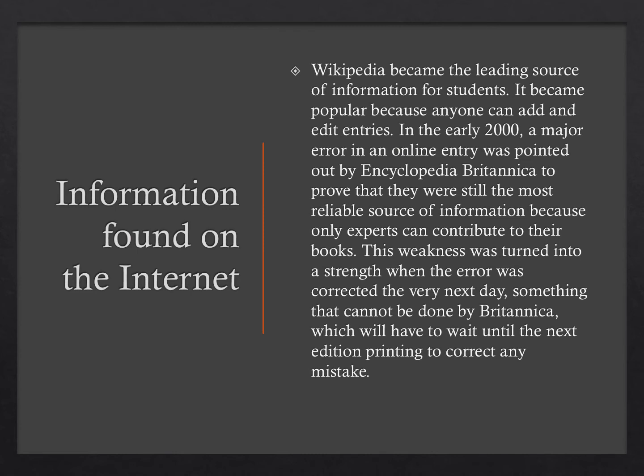Wikipedia became the leading source of information for students. It became popular because anyone can add and edit entries. In the early 2000s, a major error in an online entry was pointed out by Encyclopedia Britannica to prove they were still the most reliable source. However, this weakness was turned into a strength when the error was corrected the very next day — something that cannot be done by Britannica, which has to wait until the next edition printing to correct any mistake.